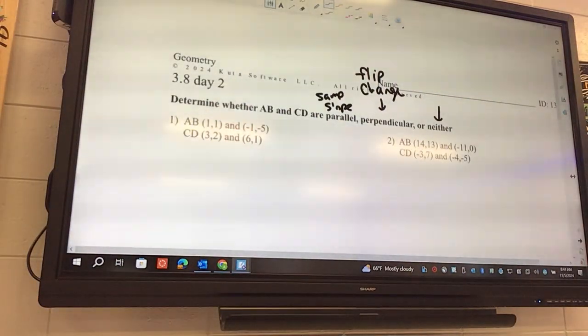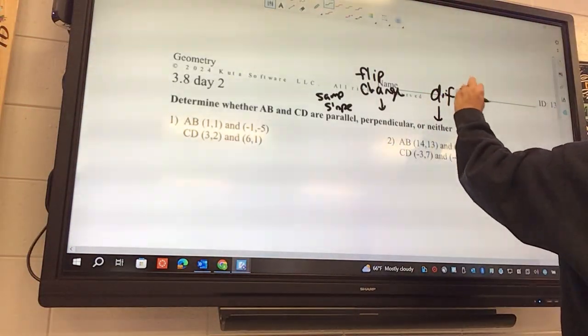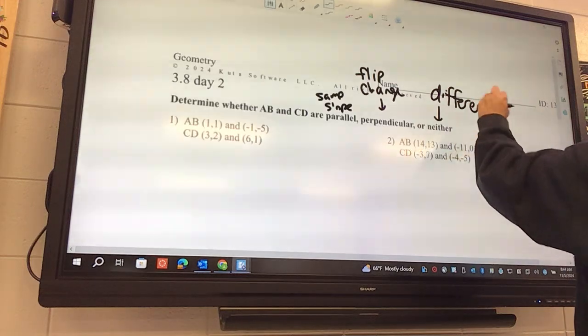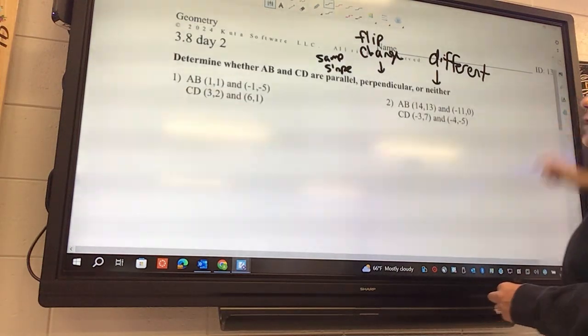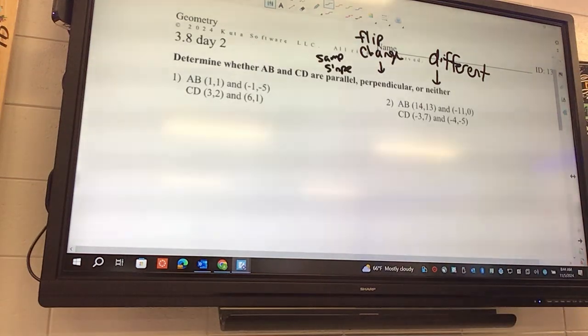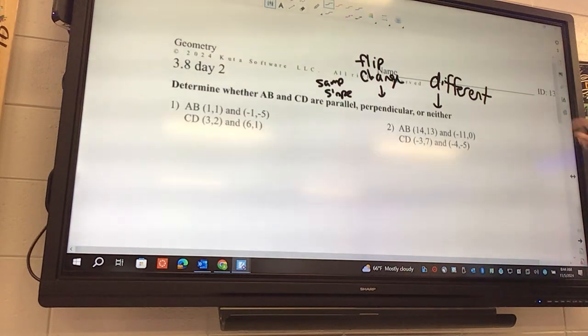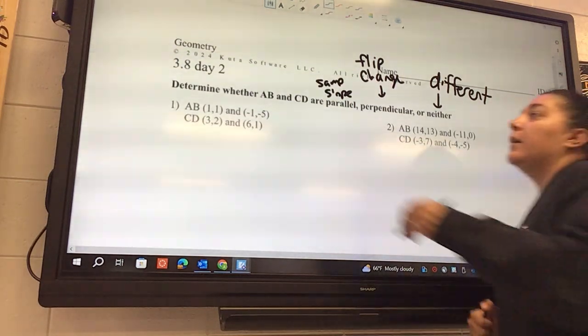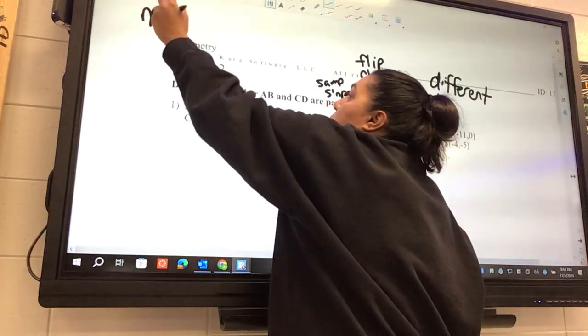And then neither is when the slopes are like totally different. I mean hopefully there's no errors, but I made these sheets at the same time so who knows. Yeah, it was Sunday like 8 o'clock. So if we look at the very first one, what is the formula that we have to use? M equals y2 minus y1 over x2 minus x1.